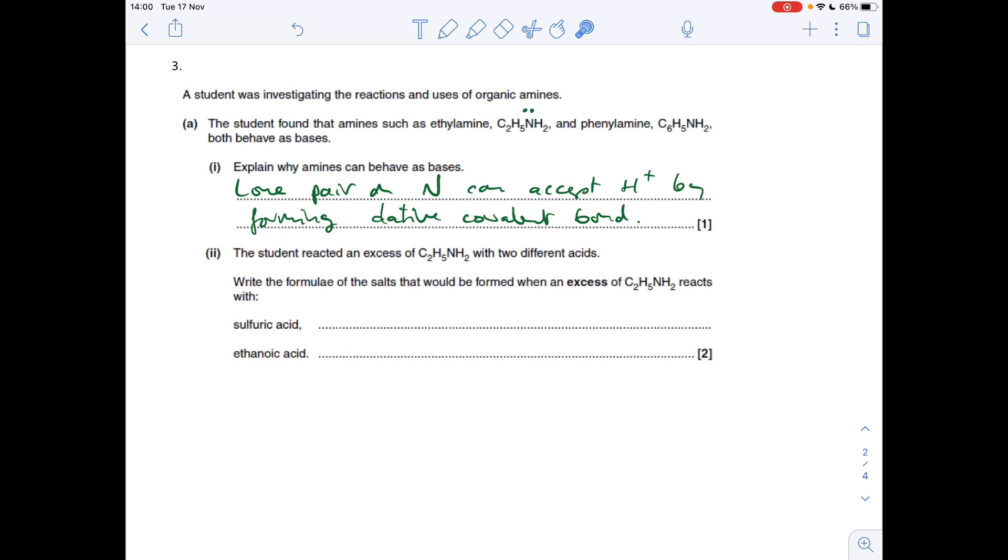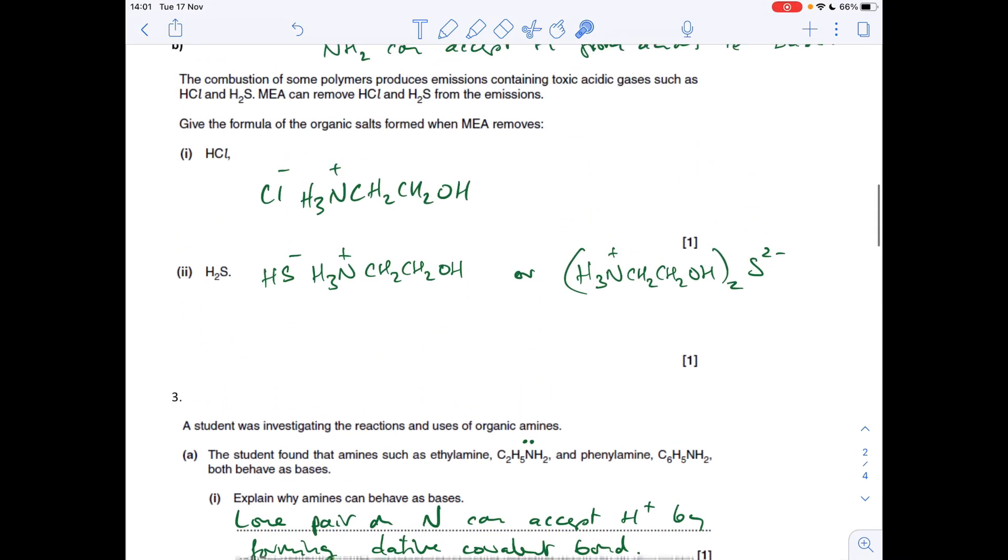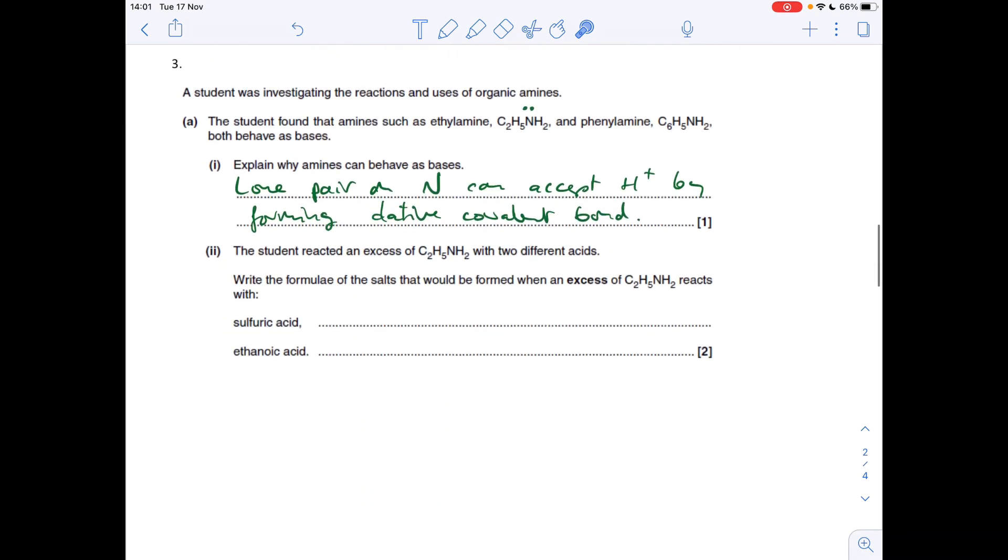Next part of question three is pretty much the same as what we had here, so we've got to come up with the formula of the salts that will be formed when an excess of ethylamine reacts with those two acids, sulfuric and ethanoic acid. So there's the first one. On sulfuric acid, there are two protons that it can donate, so you need two moles of ethylamine to accept those two moles of H plus. Each nitrogen can accept one H plus ion. So we'd get this salt here, and ethanoic acid only has one proton to donate. It's monobasic, so you just need one mole of each.